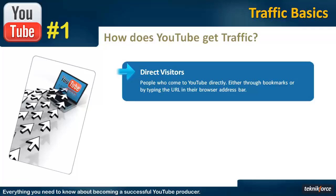Google is the most popular website in the world, as you already know, and Facebook is number two. These two websites get most of their traffic in the form of direct visitors, but YouTube gets a large chunk from other sources too.